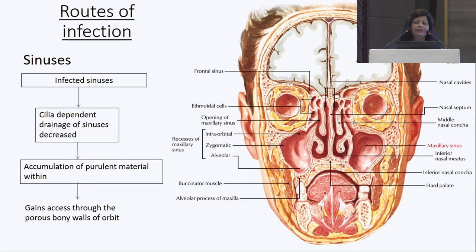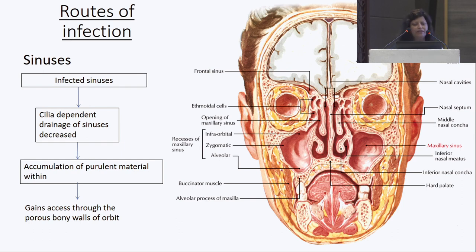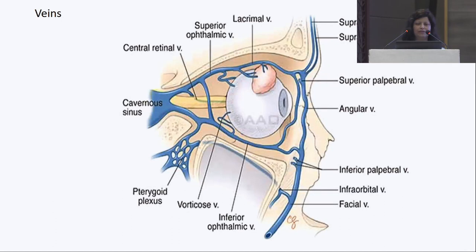The orbit is surrounded by sinuses — most commonly the maxillary antrum. When sinuses get infected, cilia-dependent drainage decreases, leading to accumulation of purulent material within the sinuses. This purulent material can gain access to the orbit through porous bony walls and lead to orbital cellulitis. Infection can also traverse through veins into the periorbital space or orbital cavity.